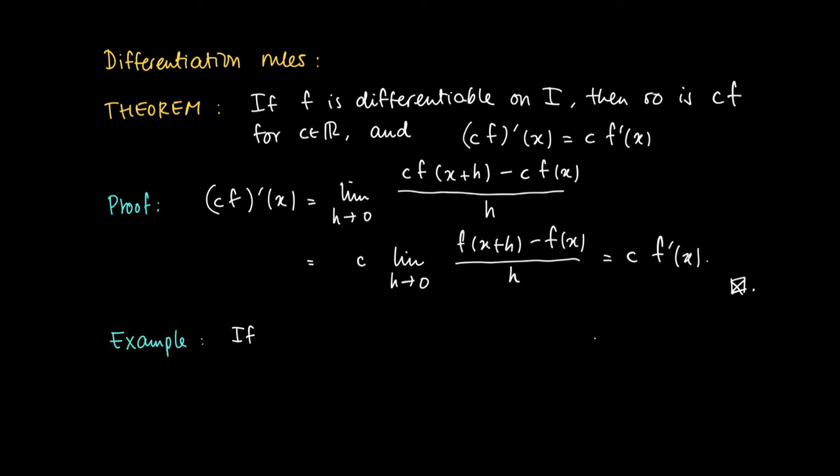In application, look at the function f(x) = 3x². We've already seen that the derivative of x² is 2x. So the derivative of f here is 3 times the derivative of x², which is 6x.